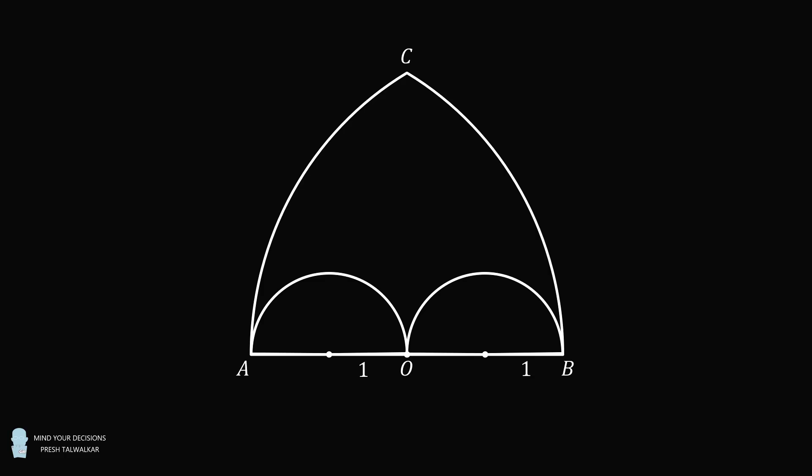Now we construct a circle that's tangent to all of the things we just constructed. So it's tangent to each of the arcs AC and BC, and it's tangent to the two semicircles. The question is, in this gothic window type shape, what is the radius of this inscribed circle?